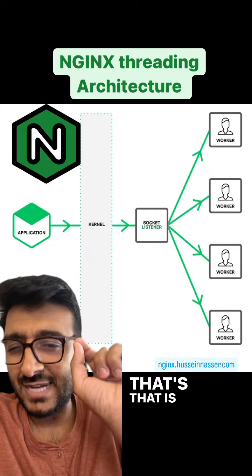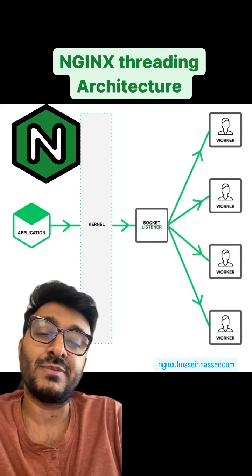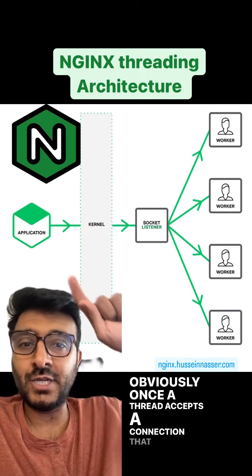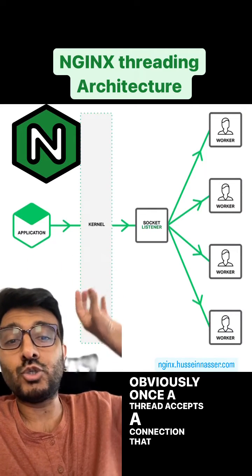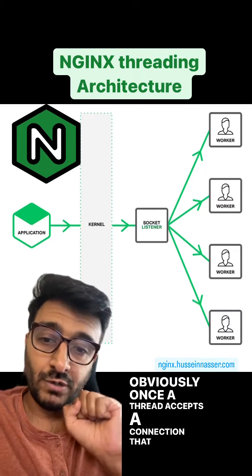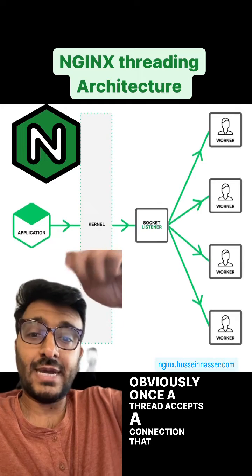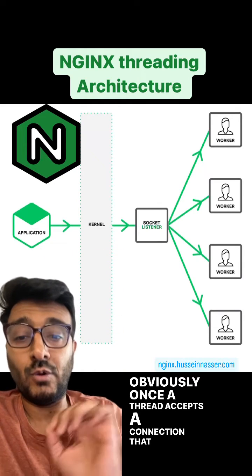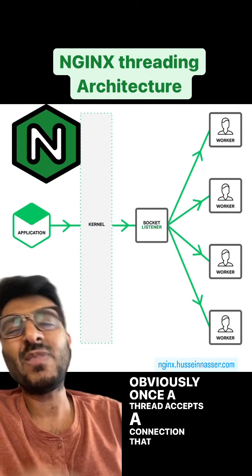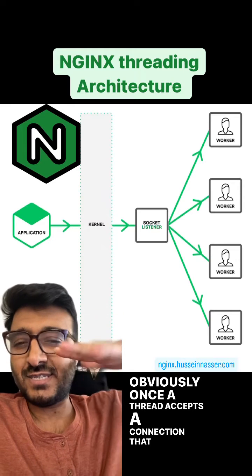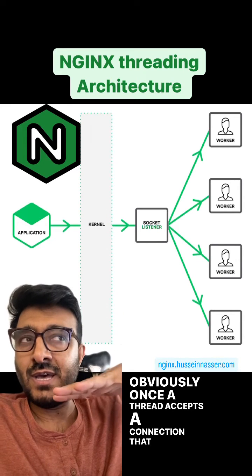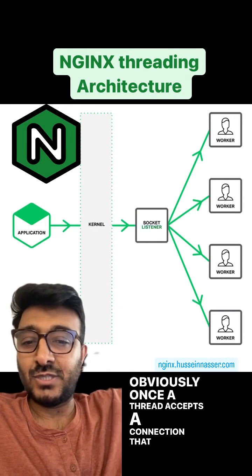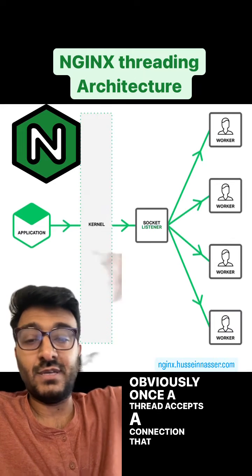That creates a bottleneck in this situation. Once a thread accepts a connection, that connection will be stored in the worker thread and requests on that connection will be served by that worker thread all the time. This creates a problem with load balancing because some connections will have requests that are heavy, while some will have lighter weight requests.